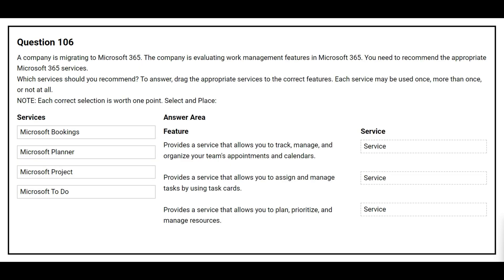Question 106. A company is migrating to Microsoft 365 and is evaluating work management features. You need to recommend the appropriate Microsoft 365 services. On the left side you have the services; on the right side you have the features and you need to choose the correct service. The first feature: provides a service that allows you to track, manage, and organize your team's appointments and calendars. The correct service is Microsoft Bookings.